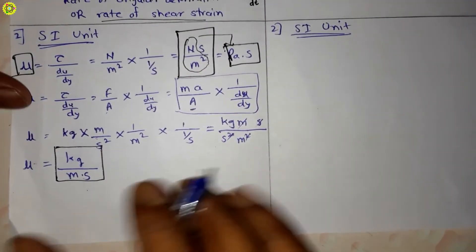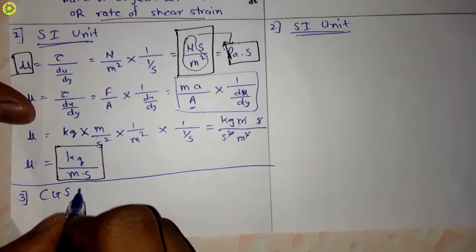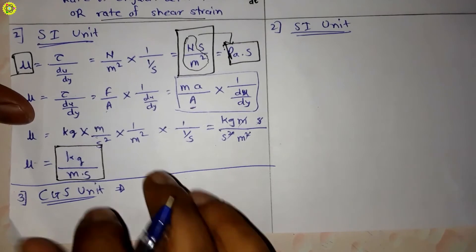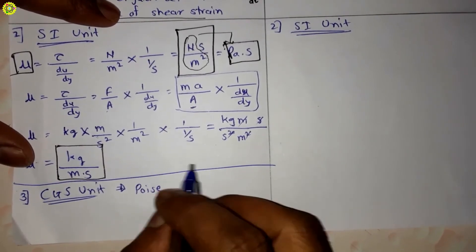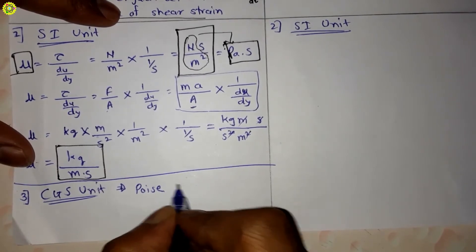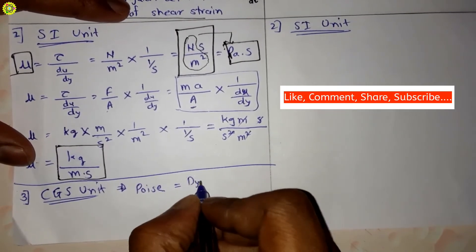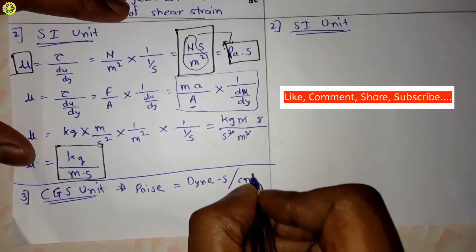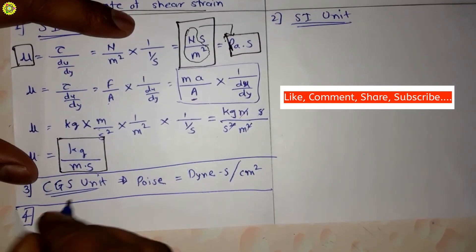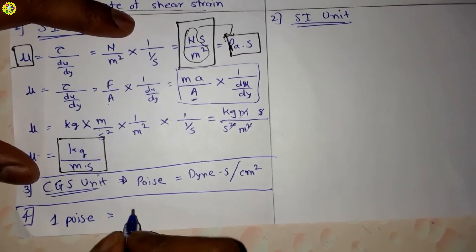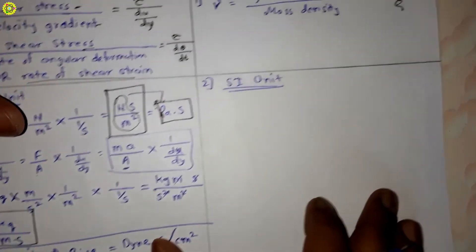The CGS unit of dynamic viscosity is poise. One poise is also written as dyne·second per centimeter square (dyn·s/cm²). The conversion is: 1 poise = 0.1 newton·second per meter square (N·s/m²).